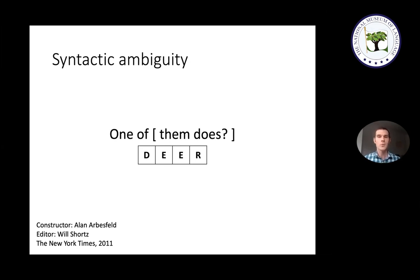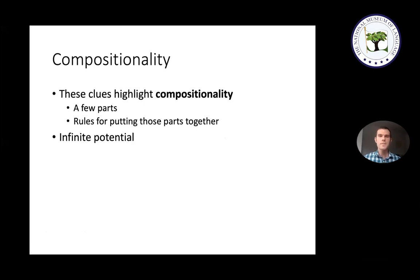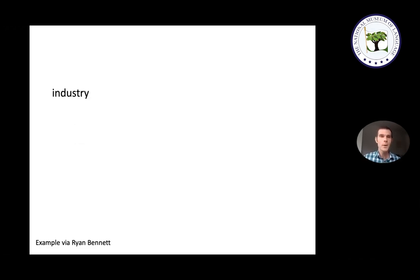For all these different examples of ambiguity, getting the right answer required breaking down the structure of the clue, figuring out what the individual units meant, and putting them back together to get the intended interpretation. These actions highlight one of the most important properties of language: compositionality — a property where you have a finite number of basic parts and some rules for putting those parts together. This simple formula underlies all different levels of language and is also incredibly powerful, giving language the ability to create infinitely many complex structures from simple parts.